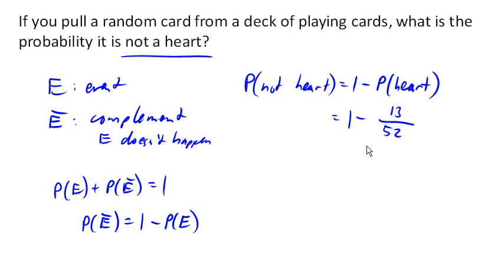So 1 minus 1 quarter, and that would be 3 quarters. So there's a 3 quarters, or 75% probability, of not getting a heart.